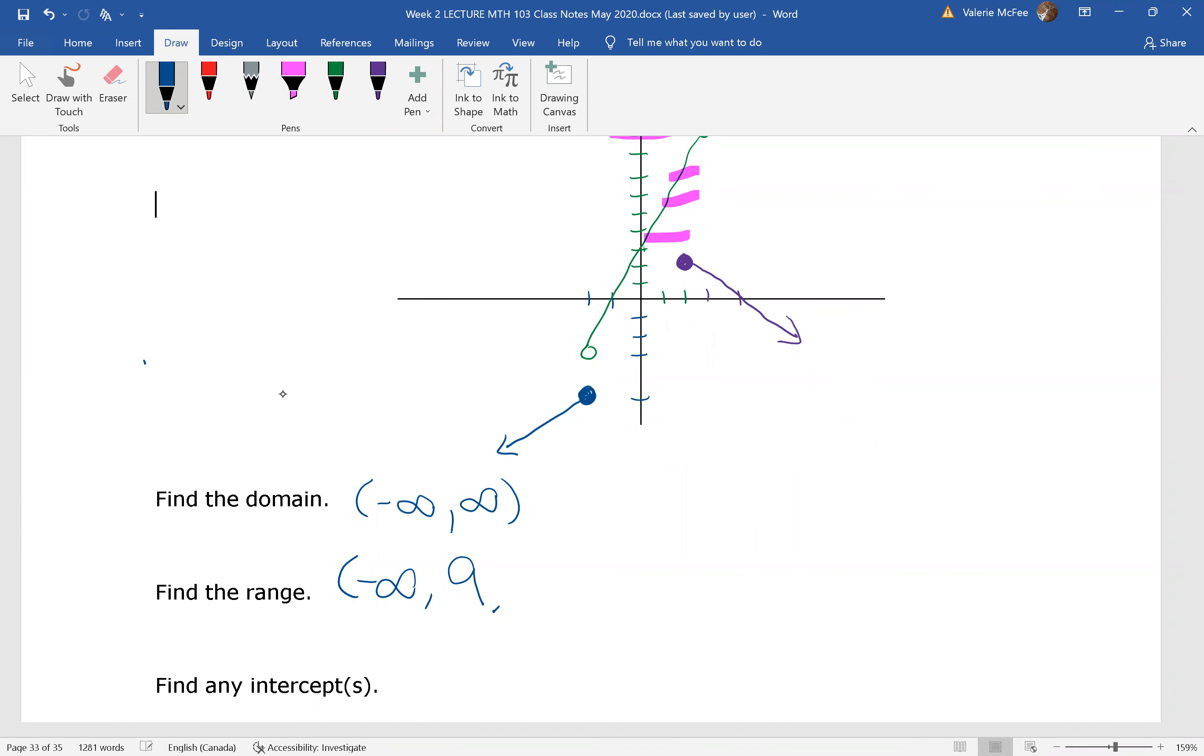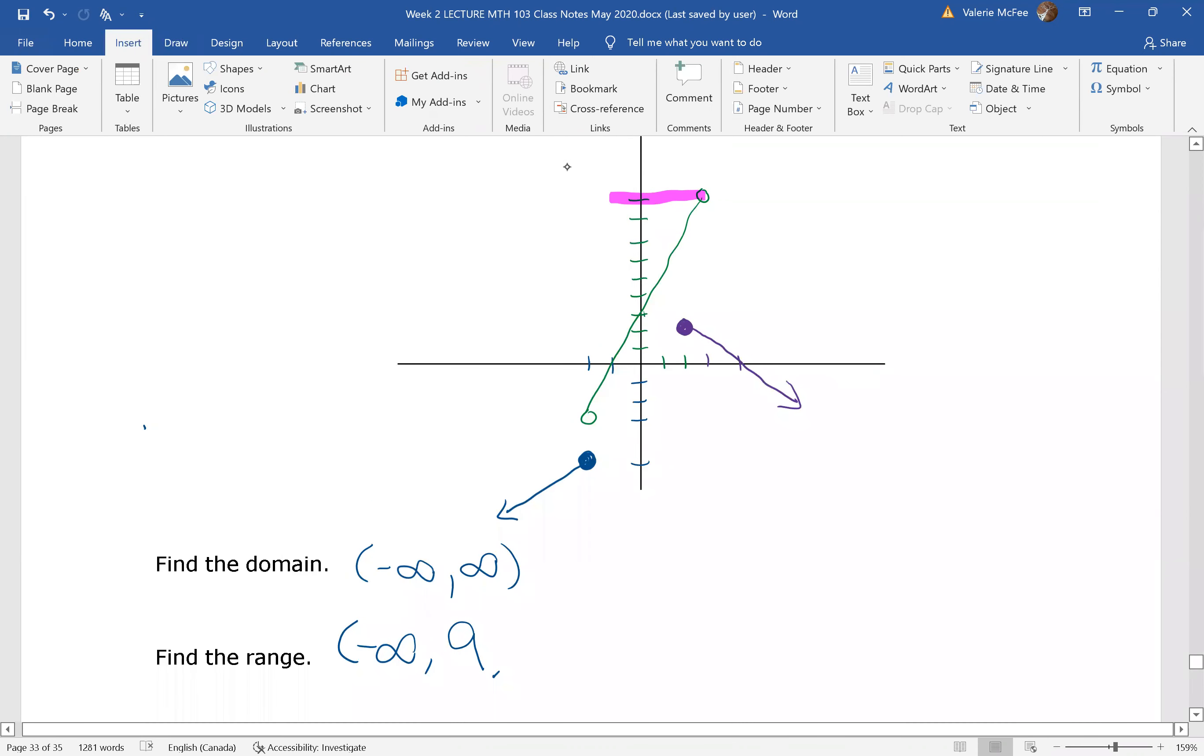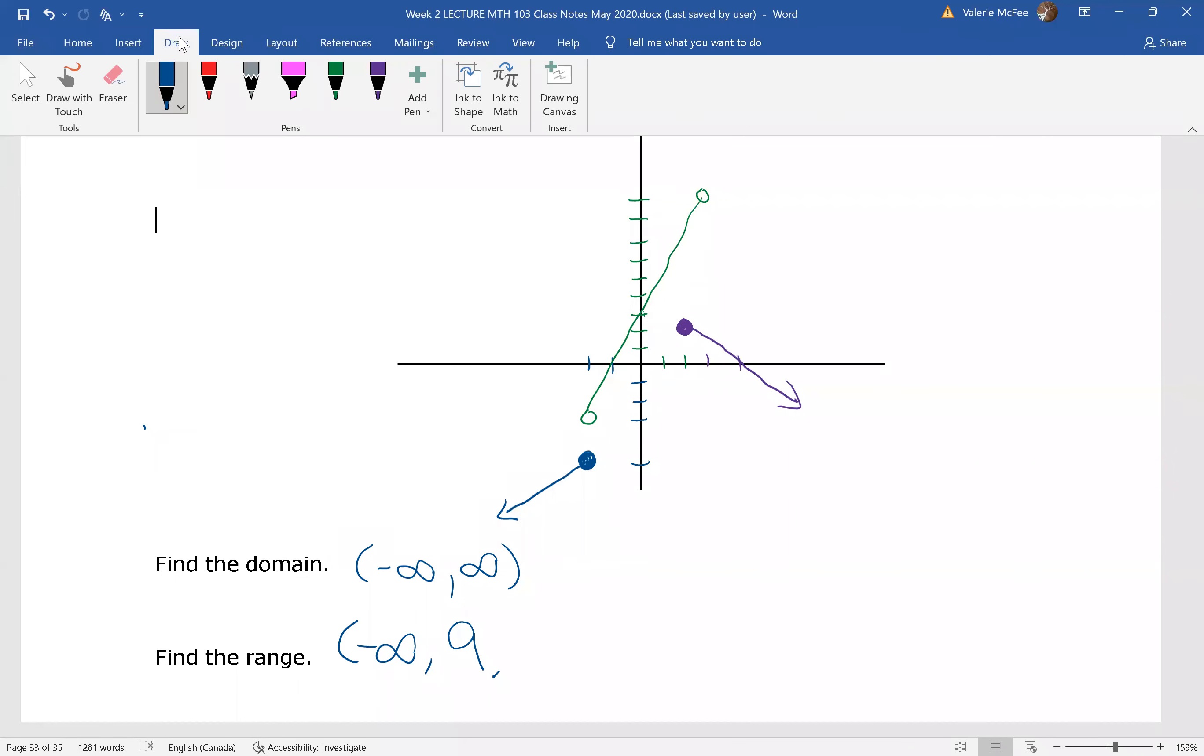You can see that this graph has more than one intercept, more than two intercepts. We have a y-intercept here, we have an x-intercept here, and an x-intercept here. I'm going to have to use two pieces of my equation. I'm going to use the second piece and I'm going to use the third piece. Why don't you find the intercepts?